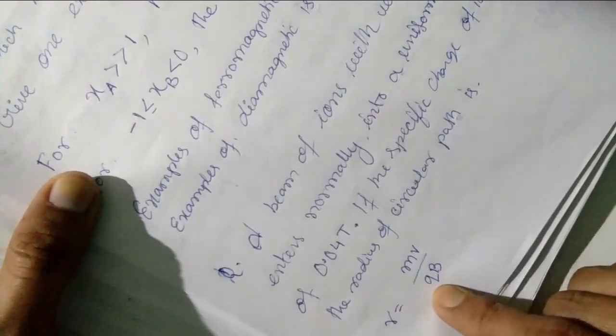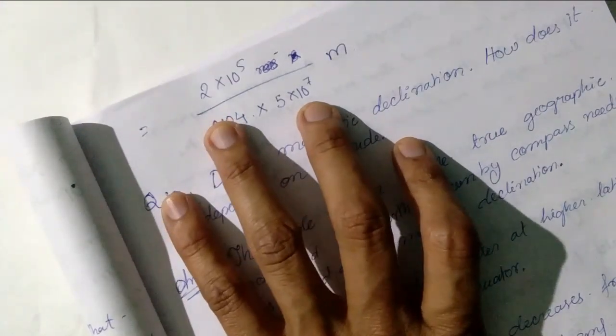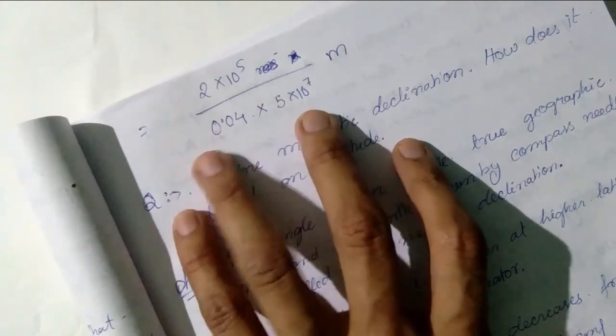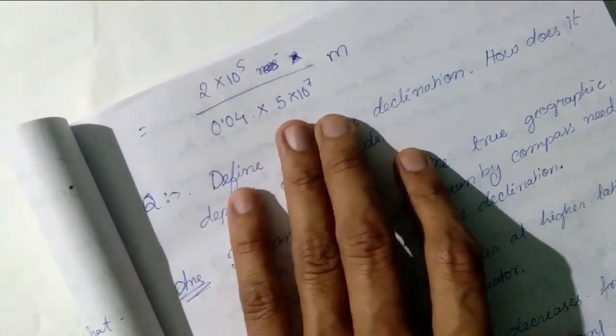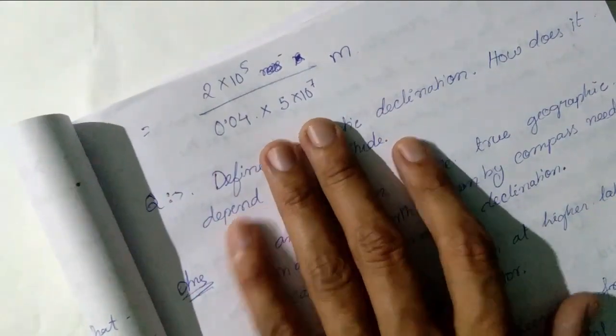This is R is equal to MV by QB or we can write it to be 2 into 10 to the power 5 divided by 0.04 into 5 into 10 to the power 7. And calculating this we can find out the answer.